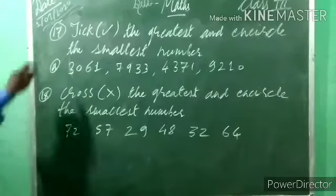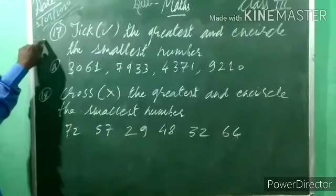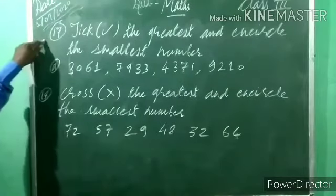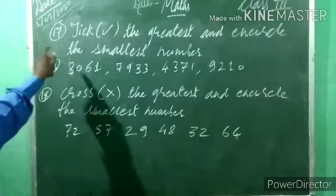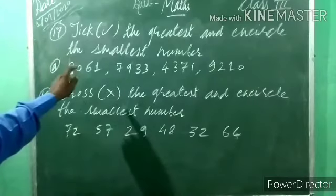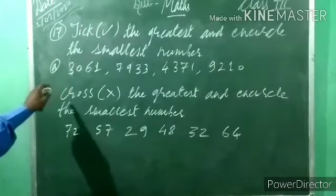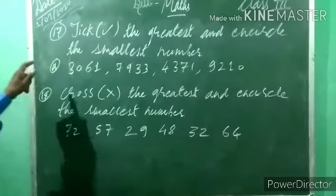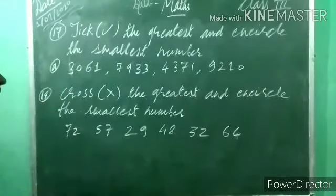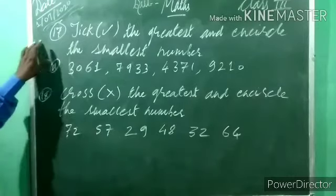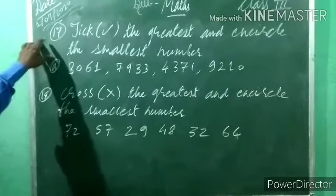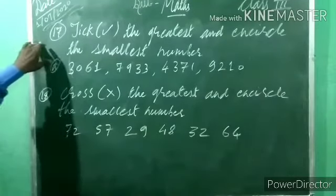Now, examples 14, 15, and 16 are like example 13 — the same approach. You only have to do counting by 10, 100, and 1000 respectively. Do the rough work and find the answer. I am now explaining example 17.